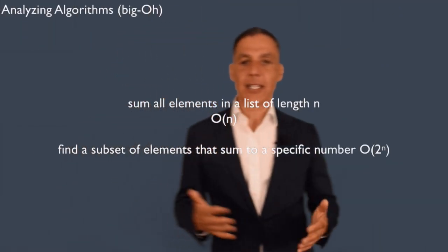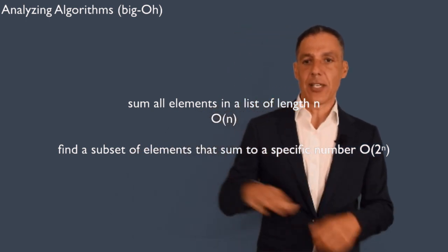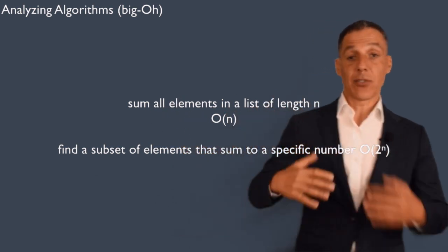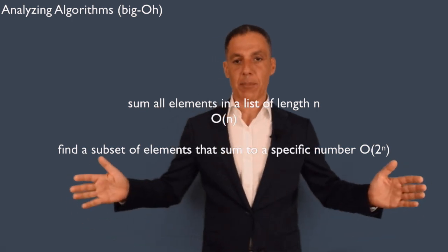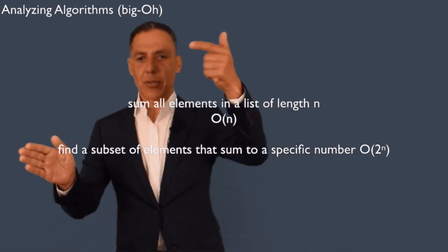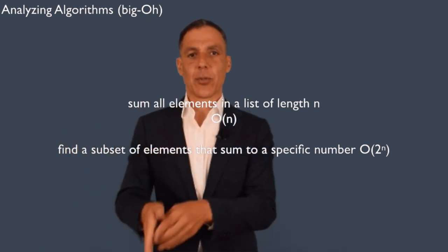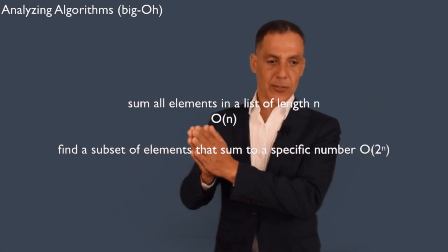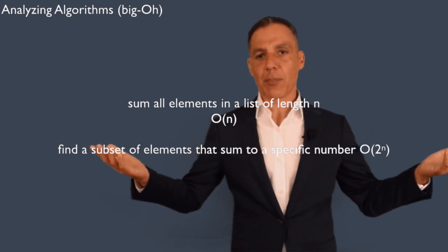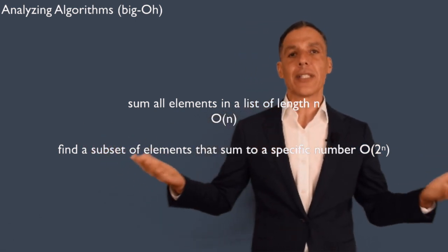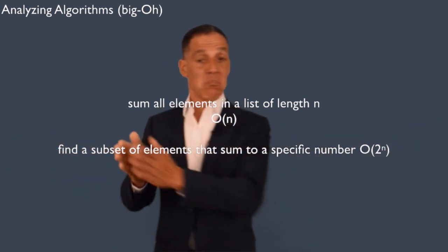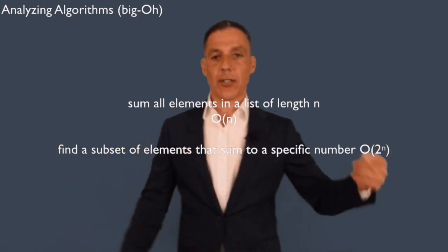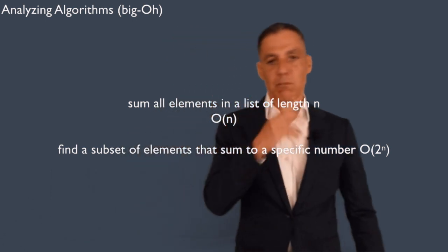Let's say I want to write an algorithm that sums all elements in a list of length N. You create a variable called sum, and add each element in a for loop that runs from 1 to N. What's the runtime complexity? It's obviously O(n) — linear in the size of the input — because as I double the size of the list, the for loop has to go twice as long.